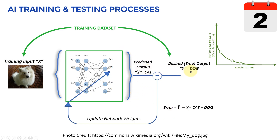If the model's predictions match what we want, the error is zero and no update is needed. However, most of the time — especially at the beginning — we have an error value. We take the error, go back, and run an optimizer to update the values of the weights within the artificial neural network. That's the overall idea of supervised AI model training: input, output, calculate error, go back and update weights in an iterative fashion.